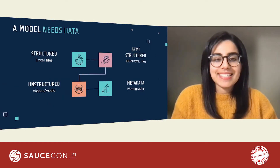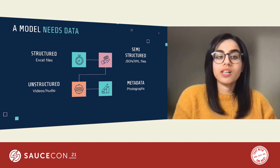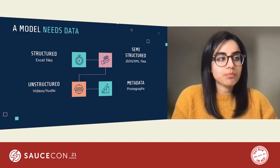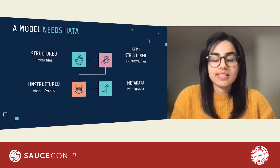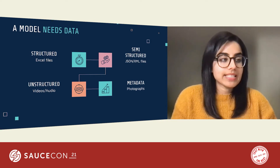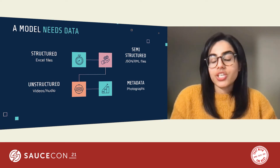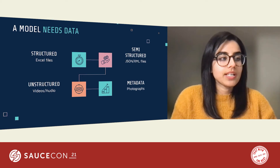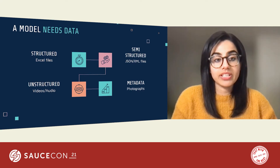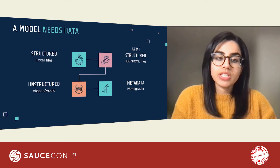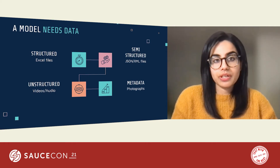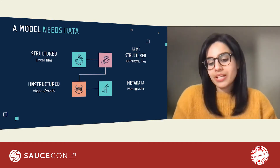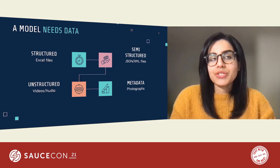A model needs data, and data can be divided into these areas: structured, semi-structured, unstructured, or metadata. Structured data adheres to predefined models — it's easy to aggregate from various locations and databases, easy to store, access and process, such as Excel files. Semi-structured data is self-describing and uses tags or markers, such as JSON or XML files. Unstructured data is not organized in a predefined manner, has irregularities, and is quite ambiguous — such as videos or audio. Metadata provides additional information about a dataset, for example a photograph: where and when was it taken? In my case, I used a mix of structured and semi-structured data for my model.